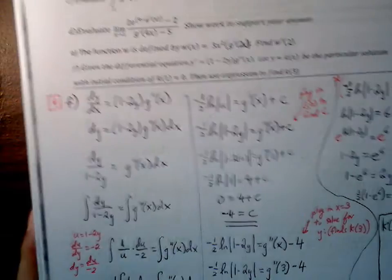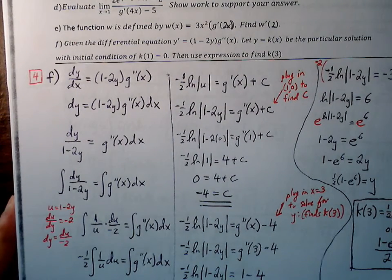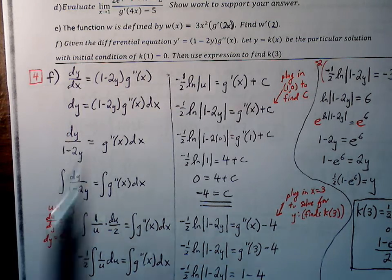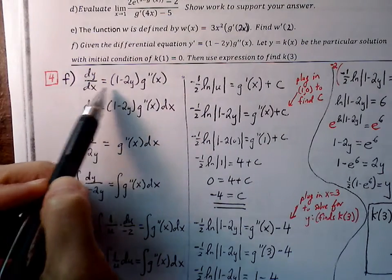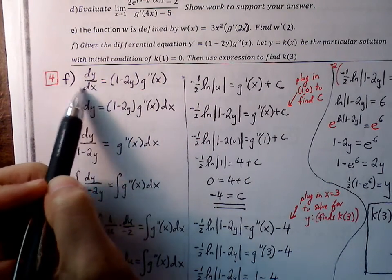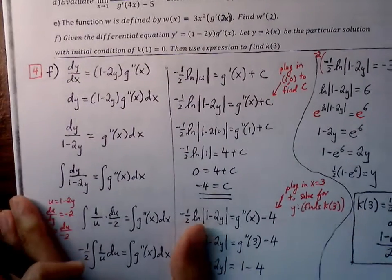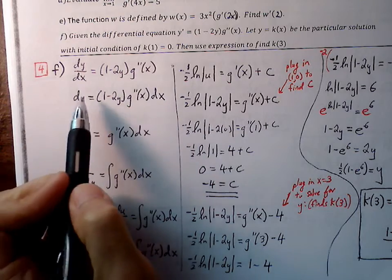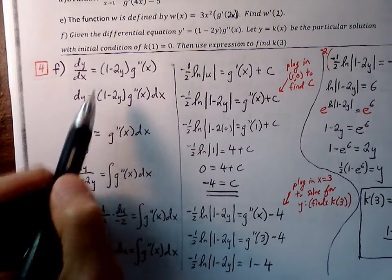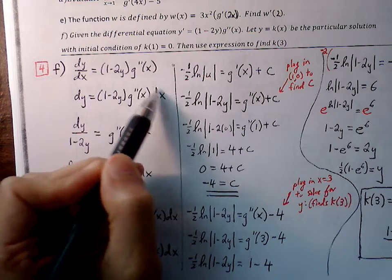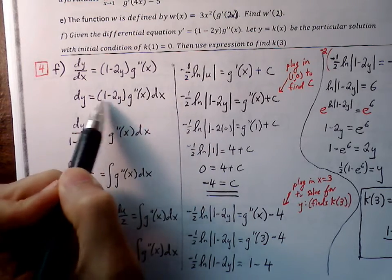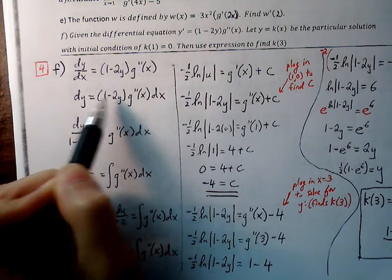Part F, the last part. We have a differential equation: y prime equals one minus two y times G double prime of x. We want to find an expression for k and use it to find k of three. We go through separation of variables. Rewriting y prime as dy over dx, we multiply dx to the other side, giving us dy equals one minus two y times G double prime of x dx. The one minus two y needs to be on the left with dy, so we divide it over.